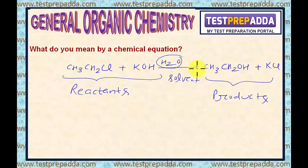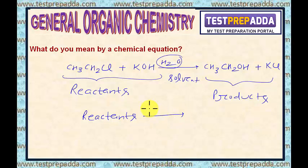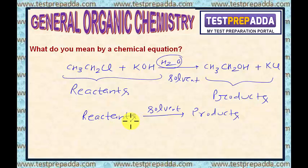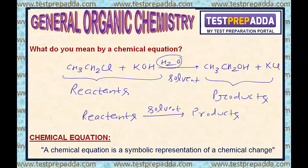So, a chemical equation can be represented with the help of reactants on the left hand side, then an arrow where we can write the solvent, and then products. Basically, a chemical equation is a symbolic representation of the chemical change.